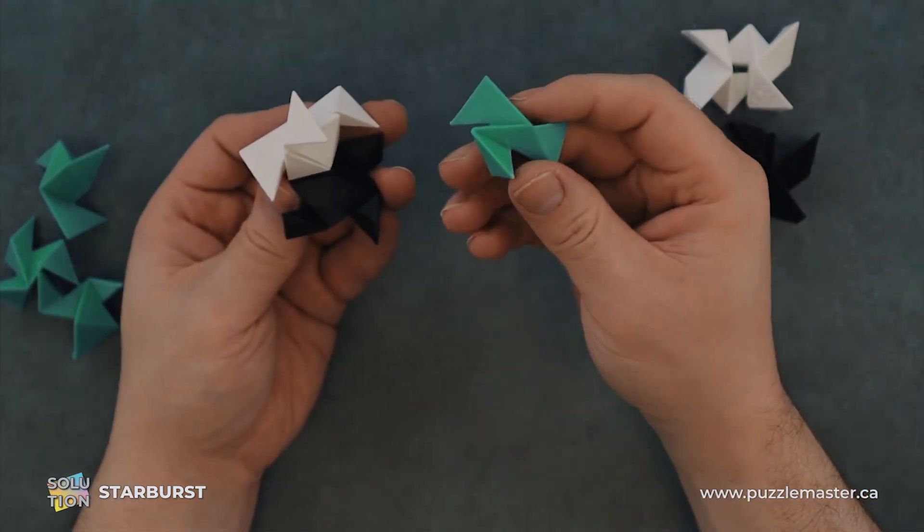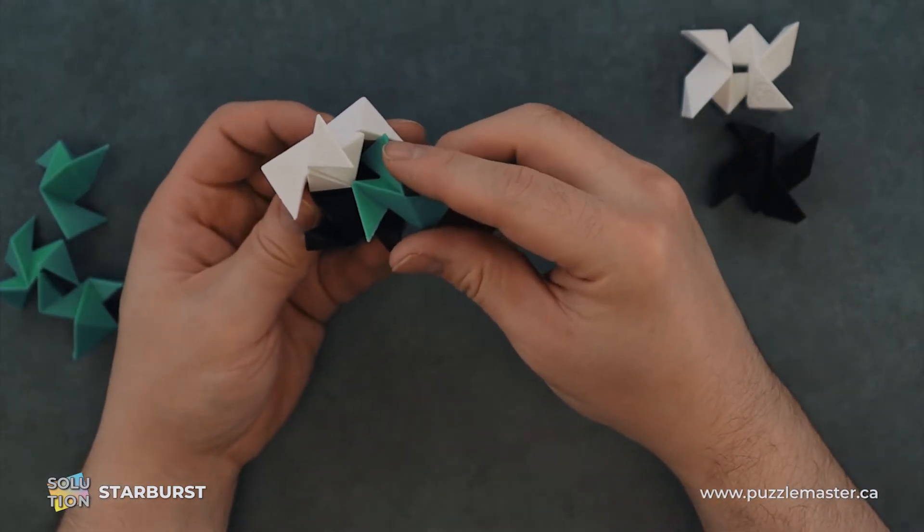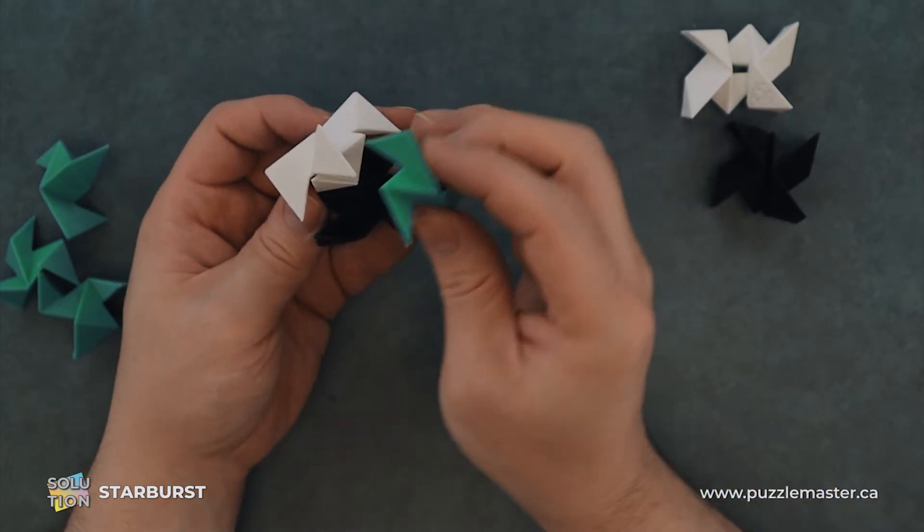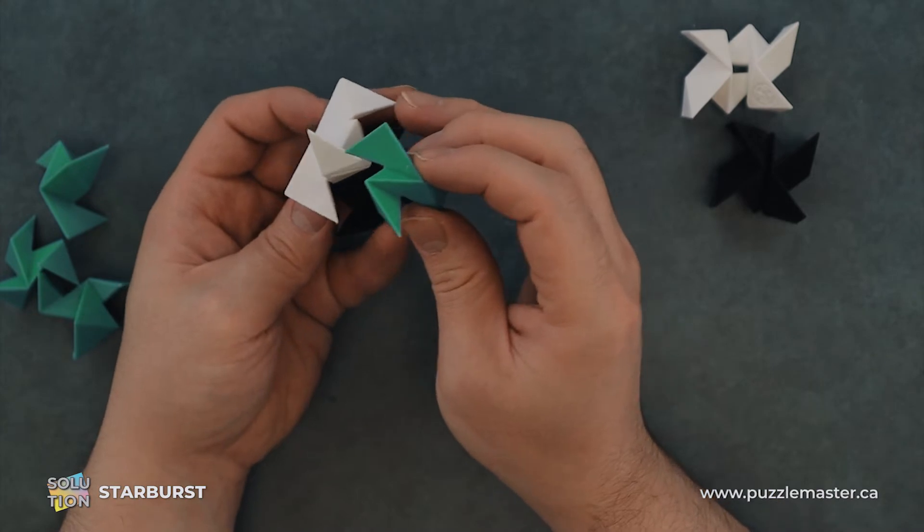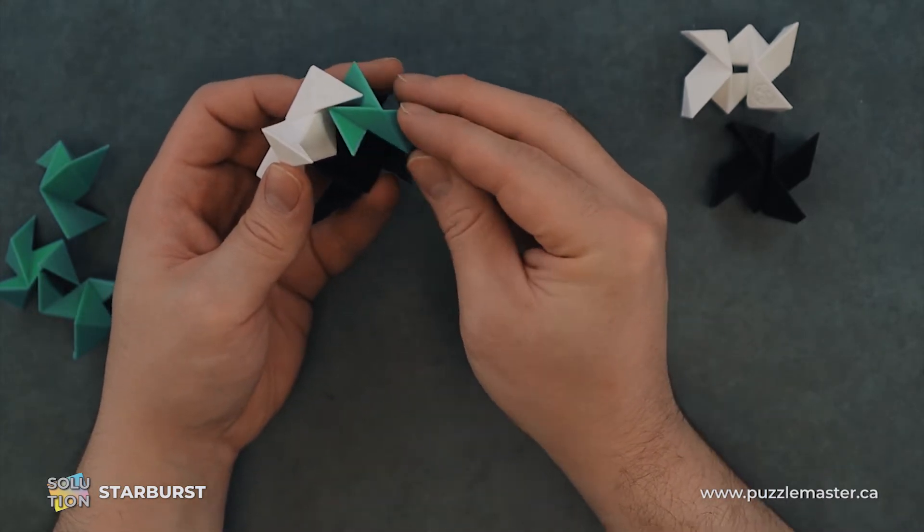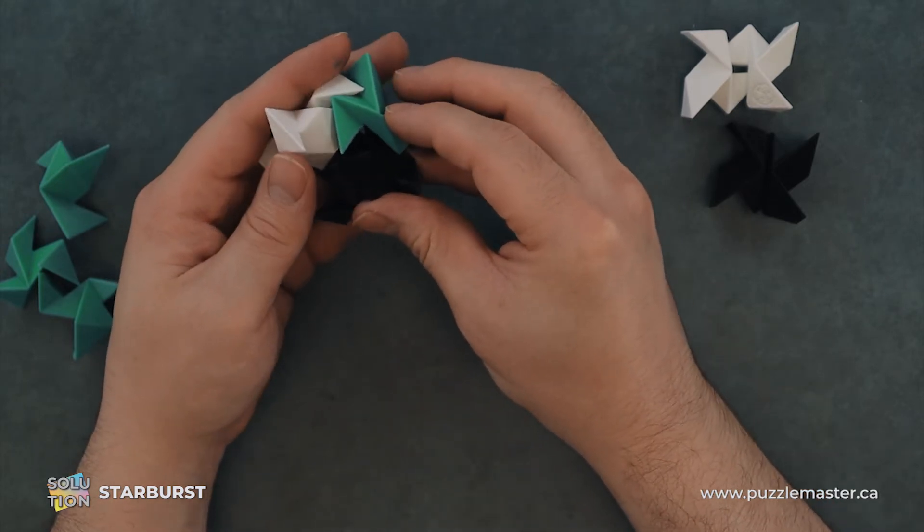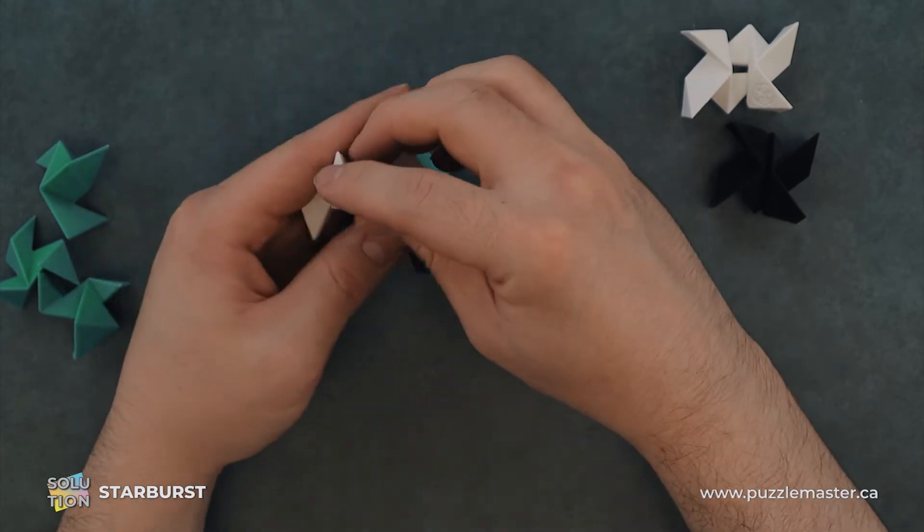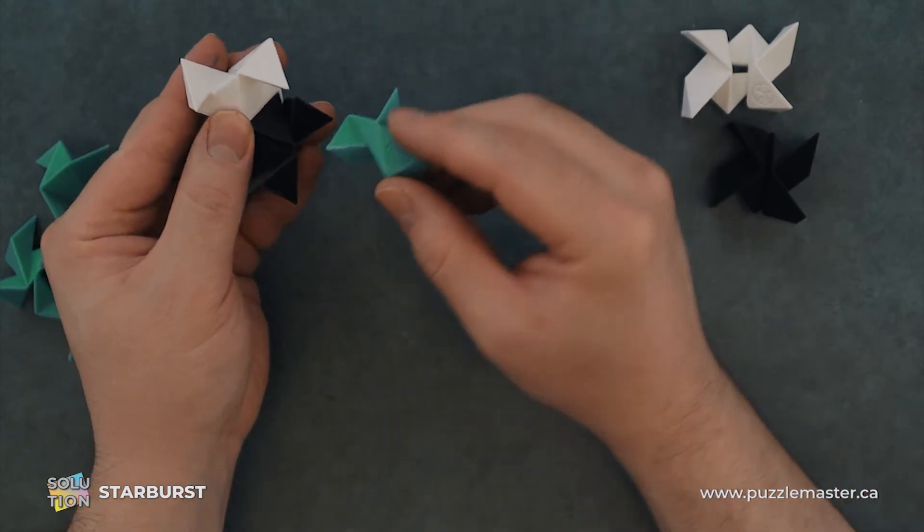Now we will take a green piece and we want this to be sticking out. So we can kind of just work this in. We'll just put it in here. I think I got this a little bit messed up.